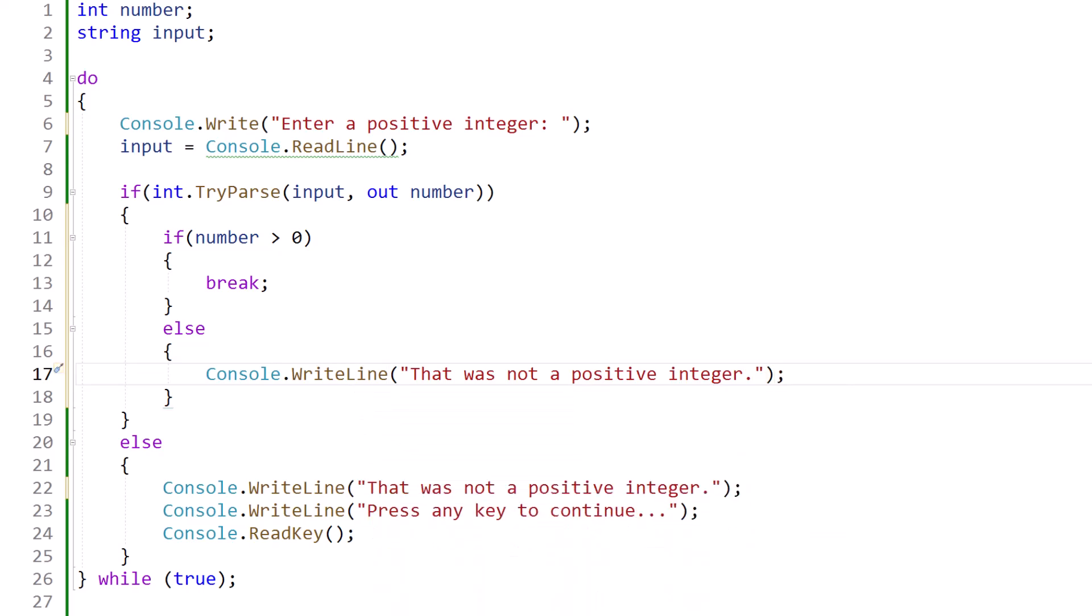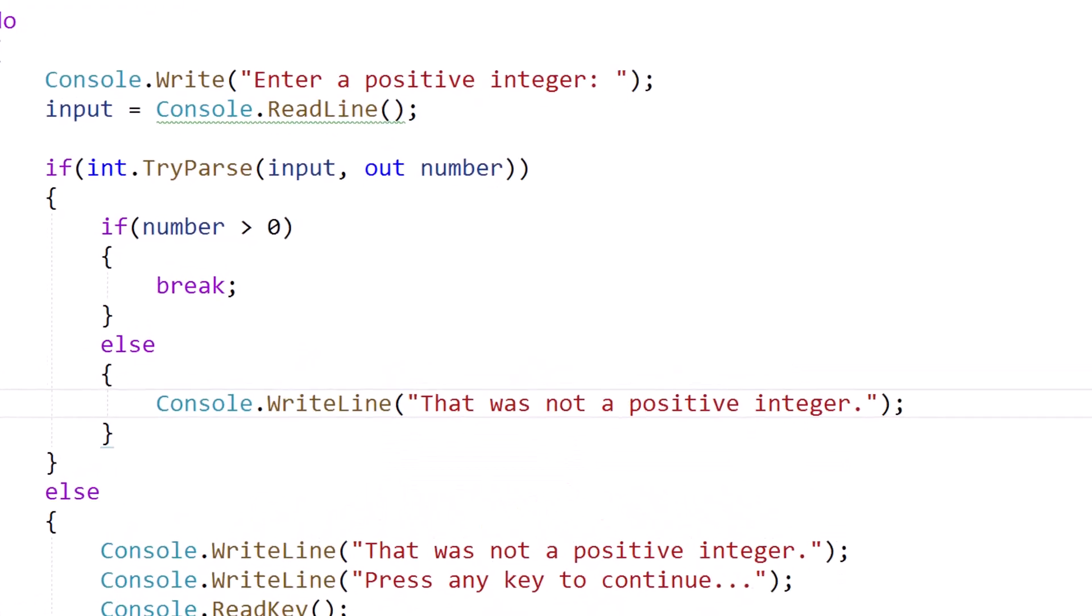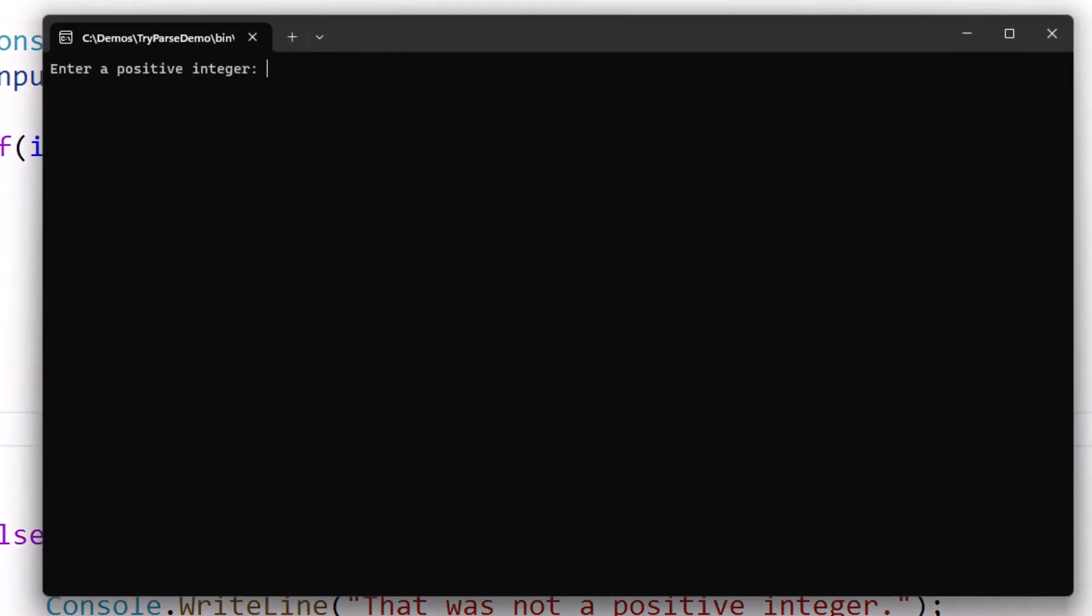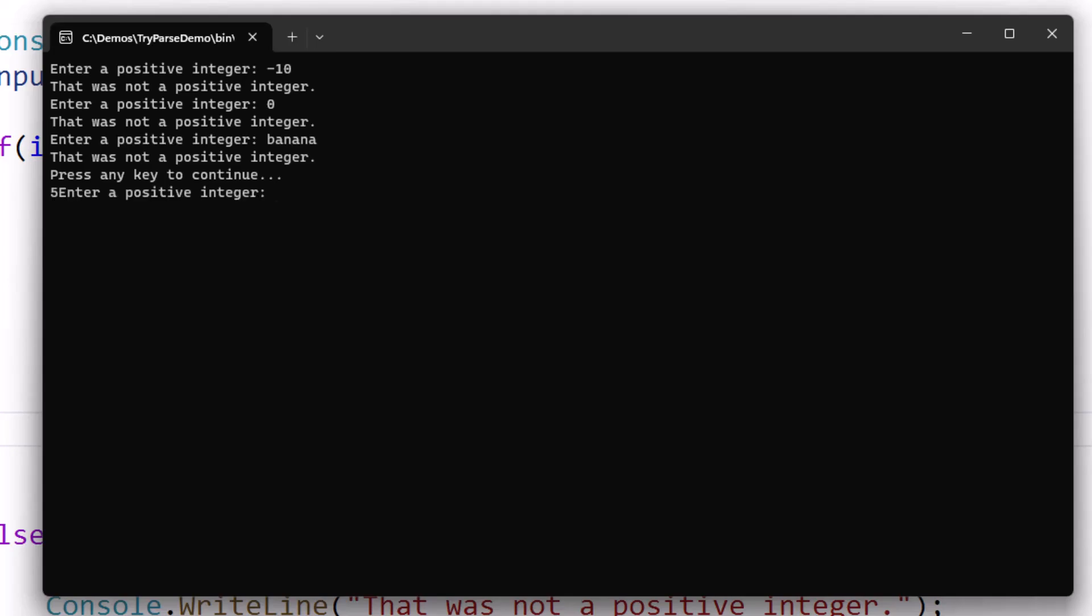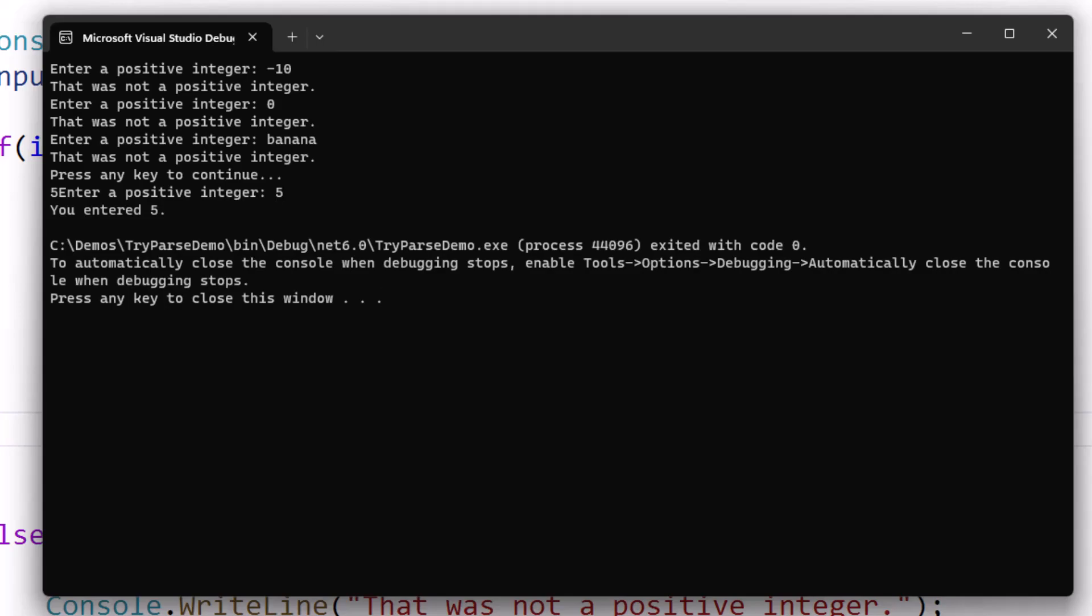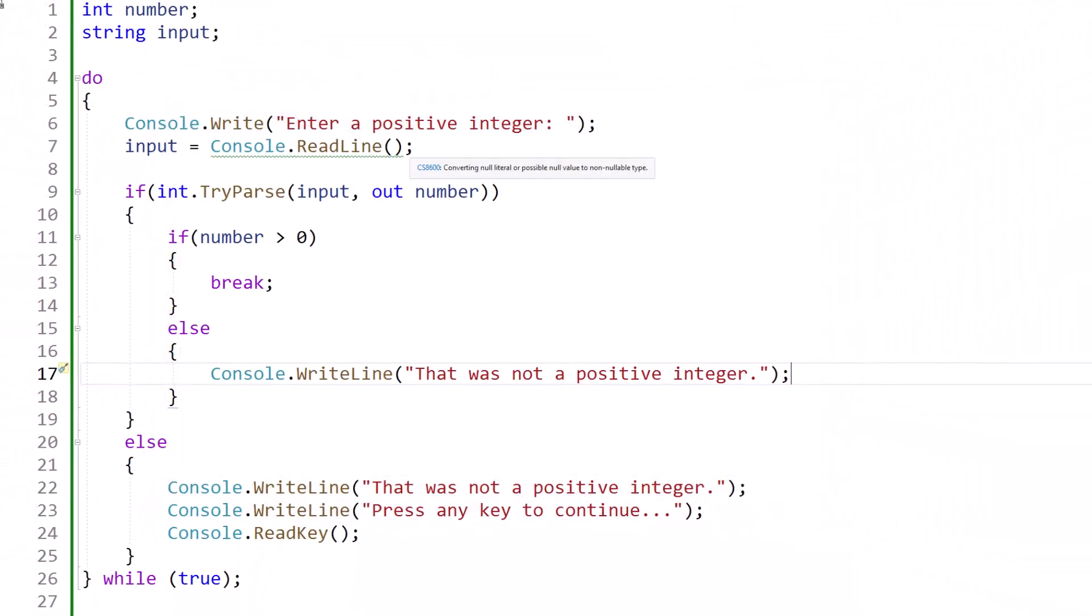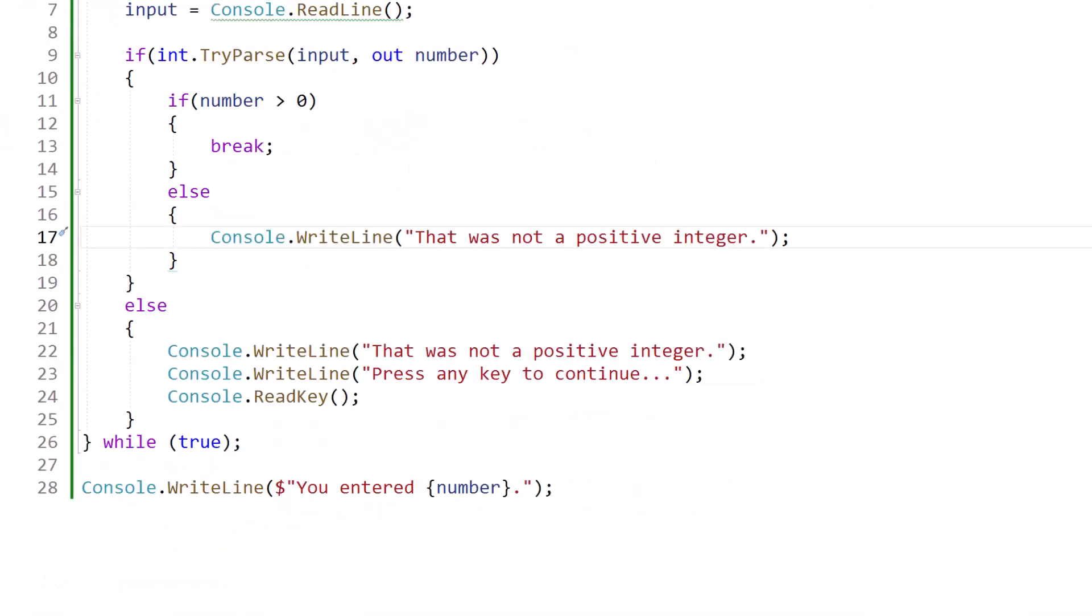So now when we run the program, we get a little bit more validation. And if I put minus ten, it's going to say that was not a positive integer. If I say zero, that was not a positive integer. And if I say banana, it was not a positive integer. So the only thing that will let me out of this loop is giving it a positive integer like five. And there we go. You entered five. Everything's good. And it's happy. So that's how we can quickly use a while loop.